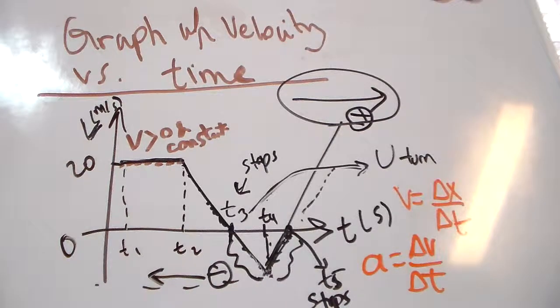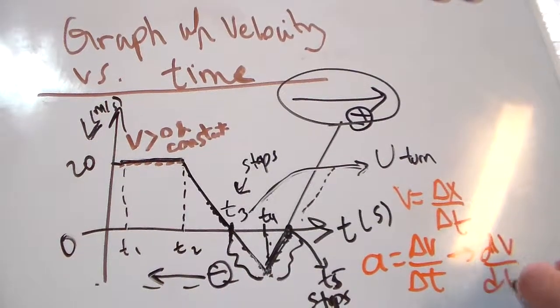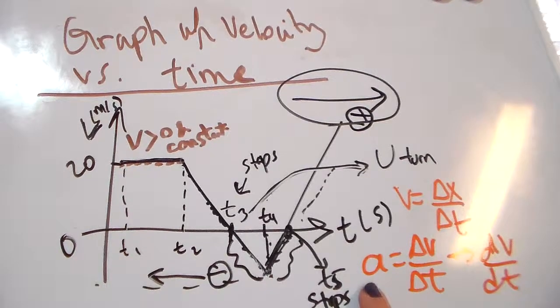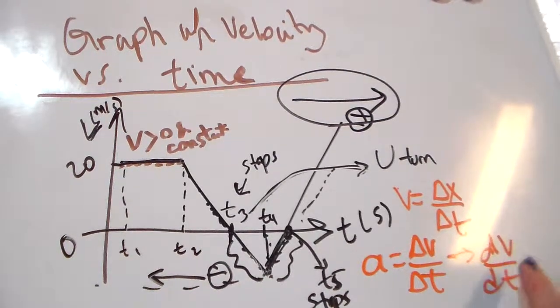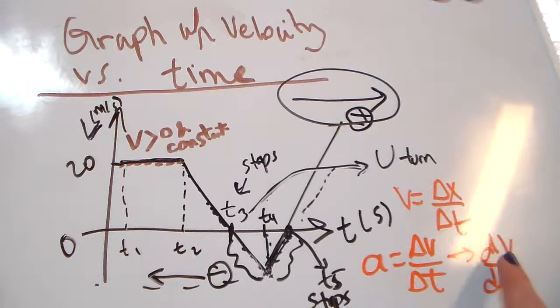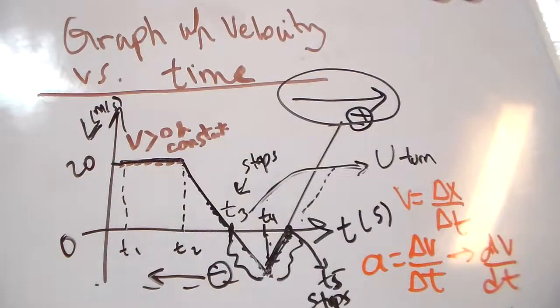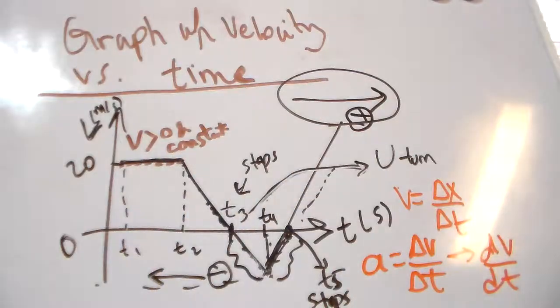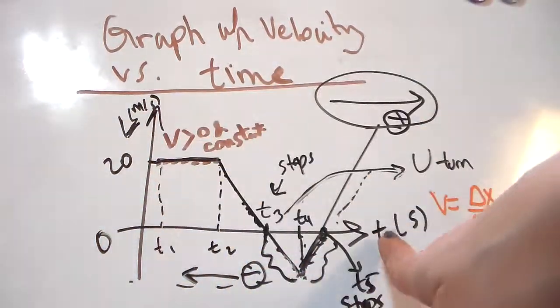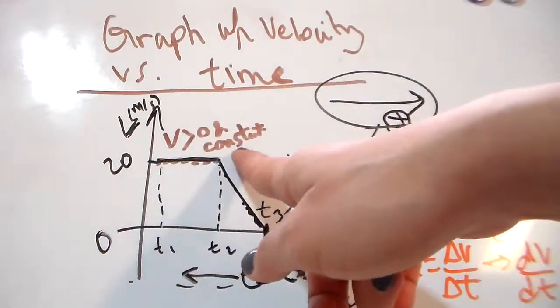As I get these two t's very close to each other, I'm changing the delta to d. So I can write acceleration as the derivative of velocity with respect to time. On the graph, this is essentially the slope of velocity versus time. Here the slope is zero, hence velocity is constant.